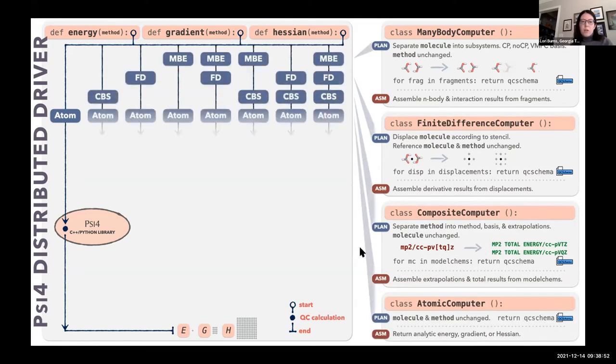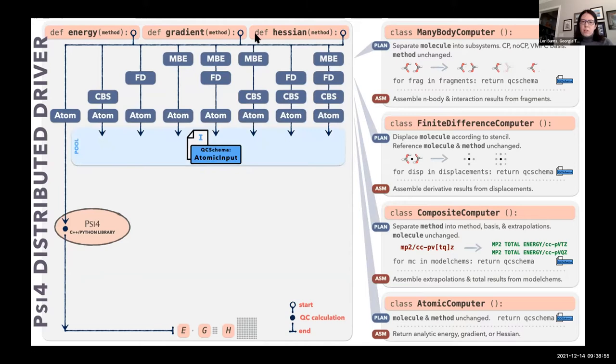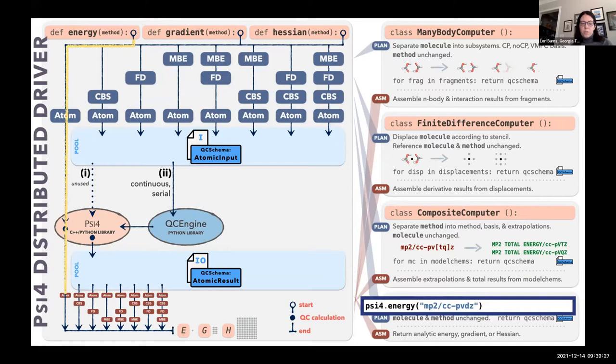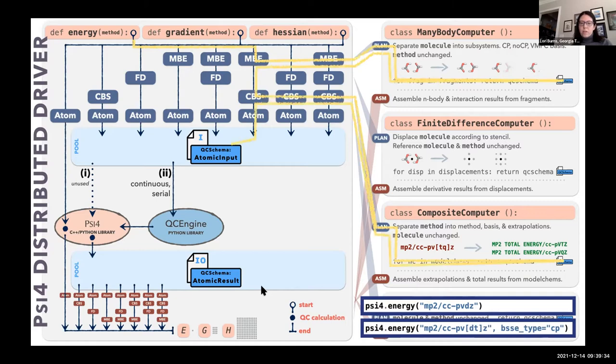Now if you start one of these calculations, it determines which of these nested classes it needs to go through. What we get out at the end is a pool of QC schema atomic inputs for quantum chemistry specifications to run. These could go directly to be run in Psi4, collect the results, the atomic results, and then run it through each of their assembly functions in order to get the final results. The simple calculation runs directly, whereas the nested calculation goes to the planning function, goes to the results, and then goes to each of the assembly functions. This is far easier to manage.